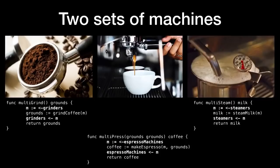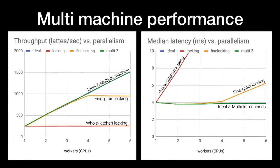So what happens if we double our machines — two grinders, two espresso machines, and two steamers? One way we can implement this in Go is by creating a buffered channel of size 2 for each machine type and putting two machines on each channel. Instead of locking a mutex, the goroutine receives from the channel to get access to one of the two machines. When it's done with the machine, the goroutine sends the machine back on the channel. With two sets of machines, we see ideal performance up to six CPUs — throughput increases linearly and latency stays flat.